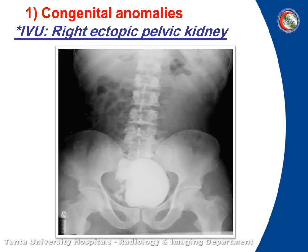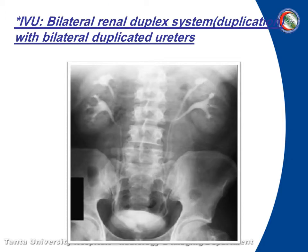In pathology, first we have congenital anomalies. First, right ectopic pelvic kidney — as you can see, there is a right-sided pelvic kidney. And here there is a duplex kidney — bilateral renal duplication, duplication of the calyceal system and duplication of both ureters.